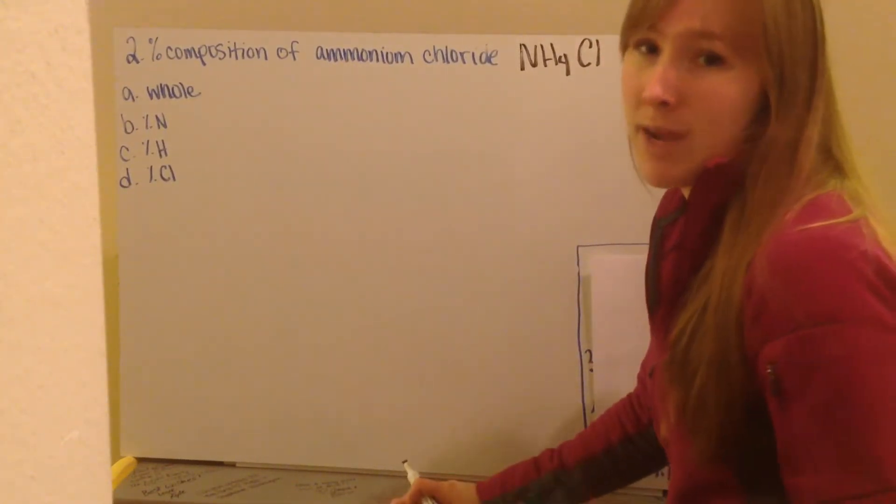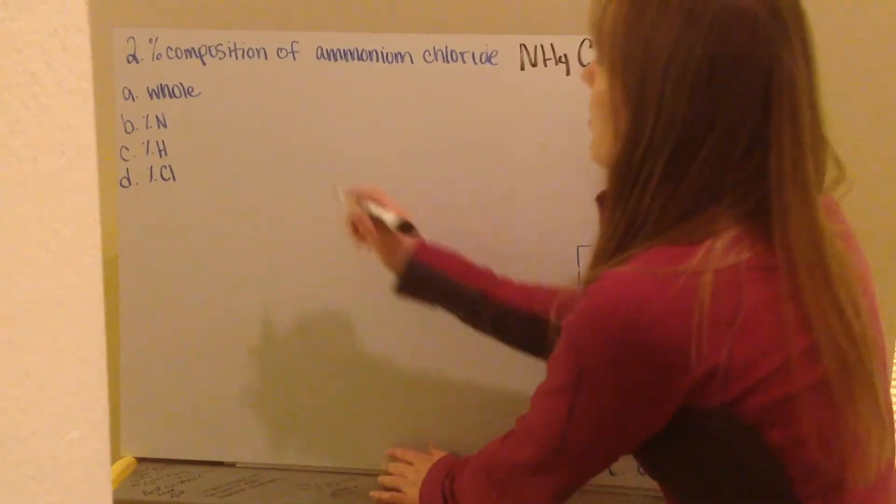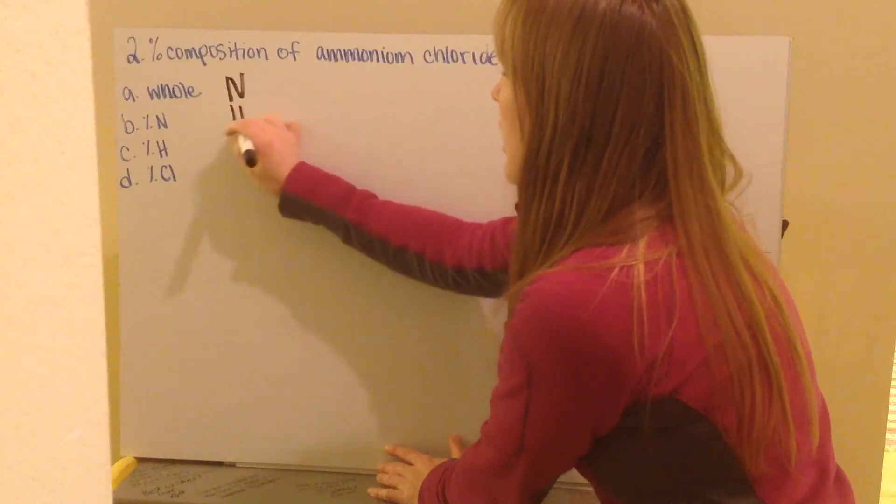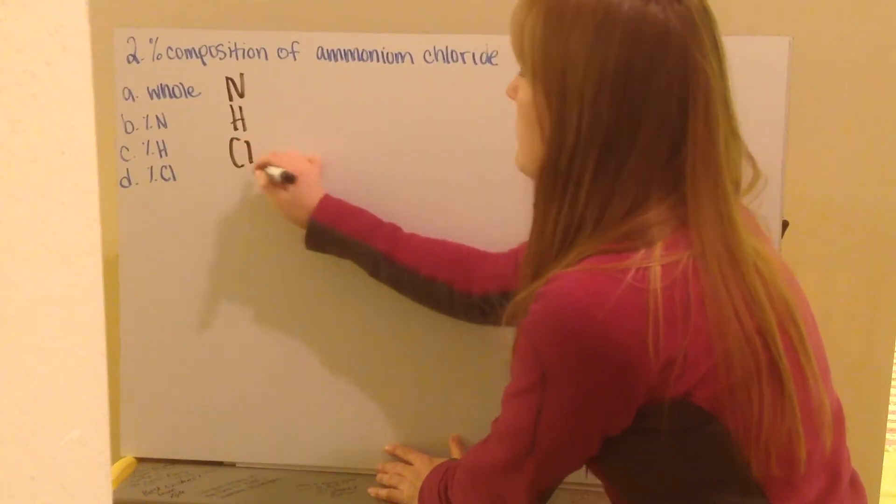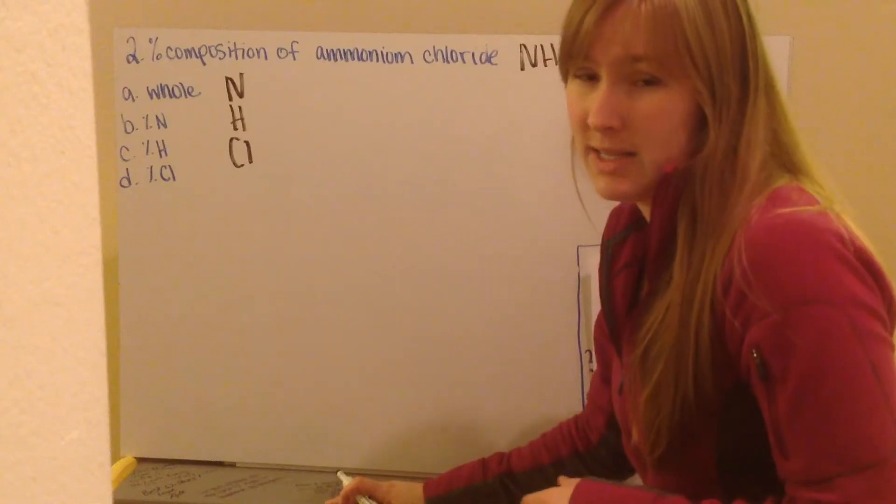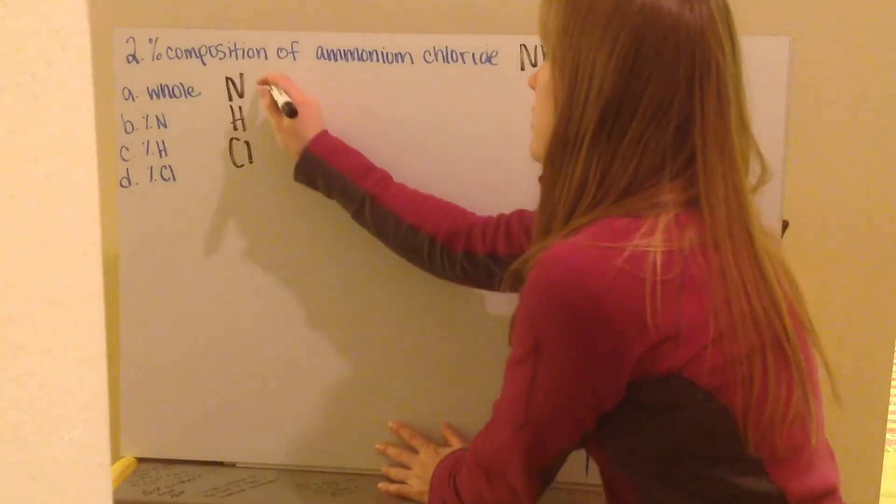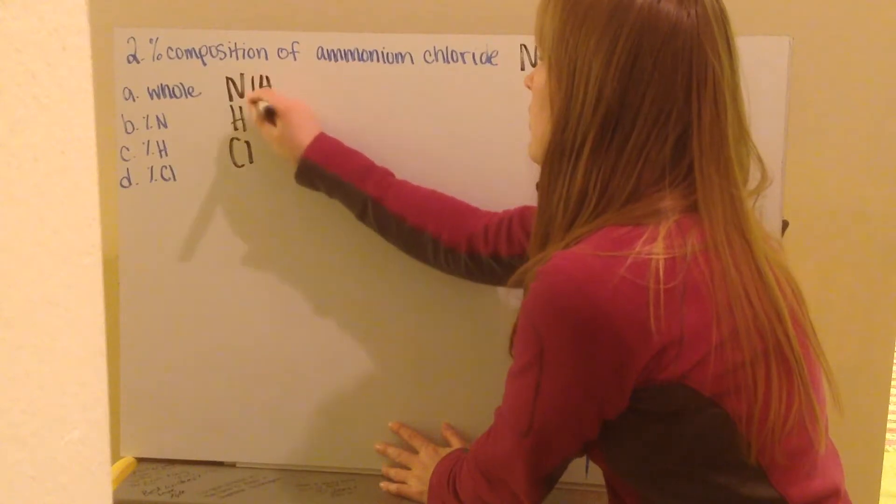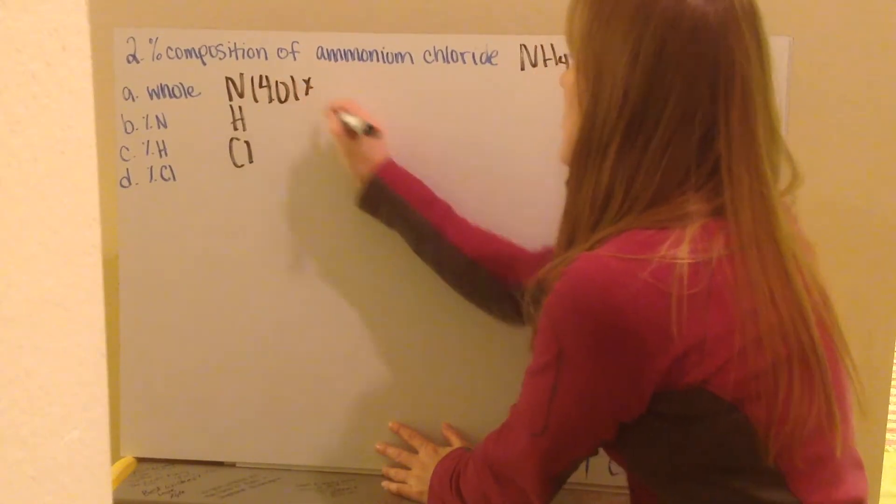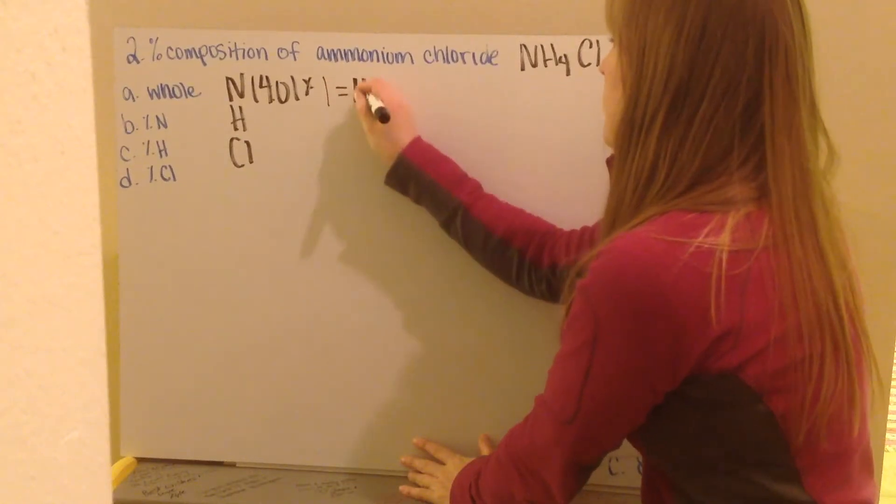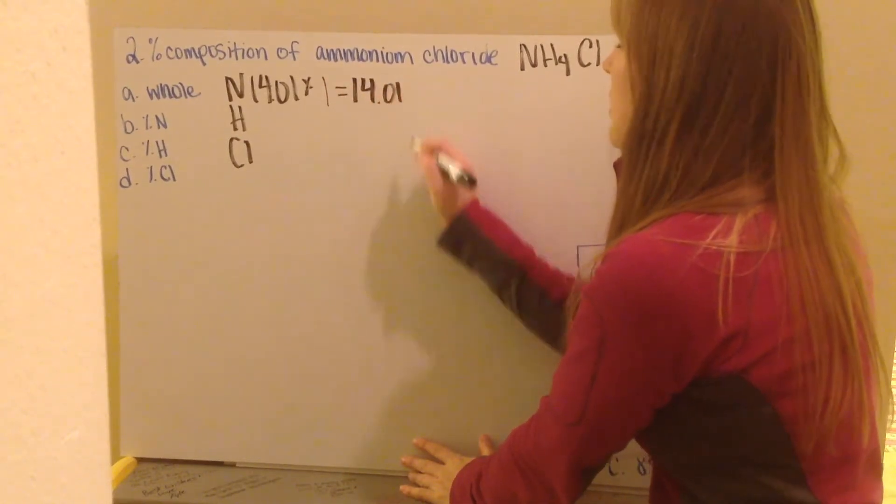I first need to determine my whole amount, or my mass of my whole. I start by finding I have nitrogen, hydrogen, and chlorine. My nitrogen, I locate it on the periodic table. It has a mass of 14.01 grams, and I have one nitrogen atom here, so that gives me 14.01 for that component.